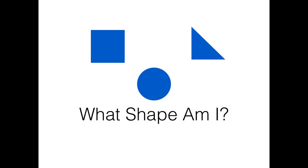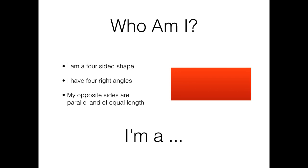What shape am I? Who am I? I'm a four-sided shape. I have four right angles. One, two, three, four. My opposite sides are parallel and of equal length. Parallel sides never touch. I'm a rectangle!